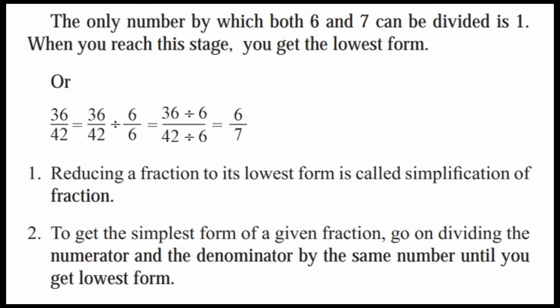Alternatively, 36/42 = (36÷6)/(42÷6) — 6 sixes are 36, 6 sevens are 42 — giving 6/7 directly. To summarize: first, reducing a fraction to its lowest form is called simplification of a fraction. Second, to get the simplest form, go on dividing the numerator and denominator by the same number until you reach the lowest form.